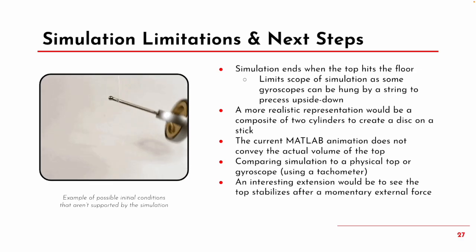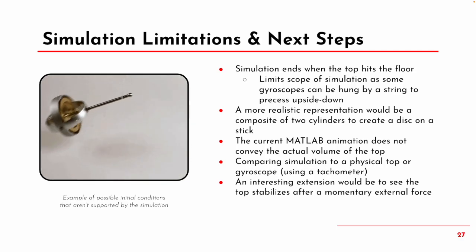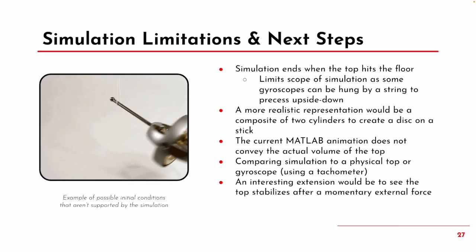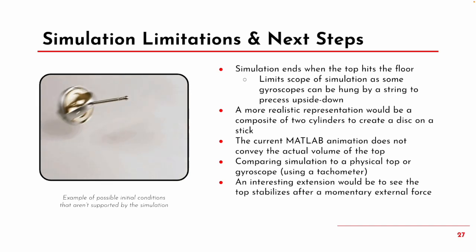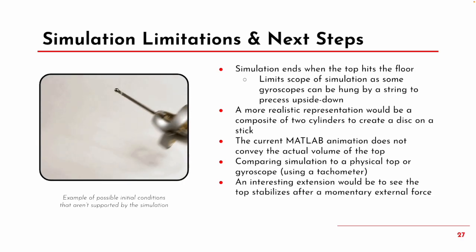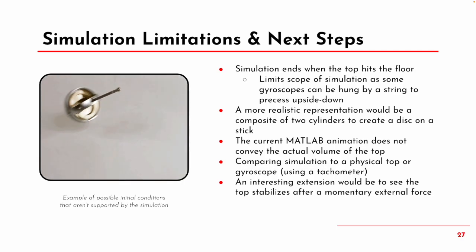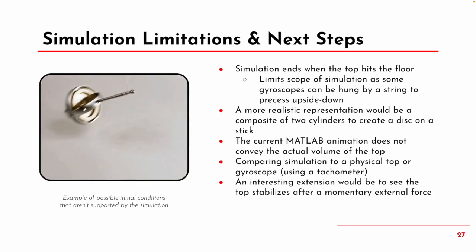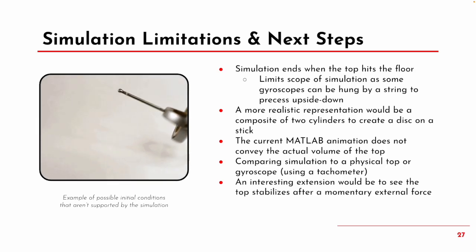Lastly, some simulation limitations and next steps: the simulation stops when the top hits the ground, which limits scope—for instance, it can't handle a gyroscope configuration. If we were to redo the geometry, we'd use a more realistic representation with two cylinders—one for the rod and one for the outer diameter of the top. We'd also improve animations to be more intuitive. Further extensions would include comparing our simulation to a real top or gyroscope, and exploring the effect of adding an external force at a point during the simulation.